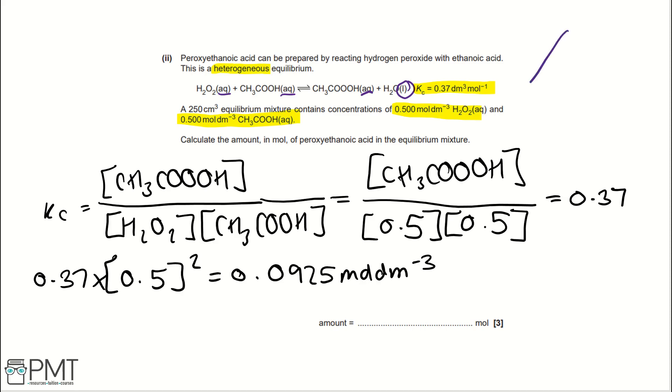If we're working out moles on its own, we would use our equation triangle, NVC. A way of remembering this is, Nigel's very clever, and if we were to apply this, we would take the concentration 0.0925, and multiply by our volume, which is 250 centimetres cubed. We want it in decimetres cubed, so we times by 10 to the negative 3, or divide by 1000. That gives us a value of 0.023125 moles. In our answer, we would write this to an appropriate number of significant figures, 0.023, for example. For this question, you get a mark for writing your expression for Kc, a mark for working out the concentration of peroxyethanoic acid, and then a mark for working out your moles correctly.